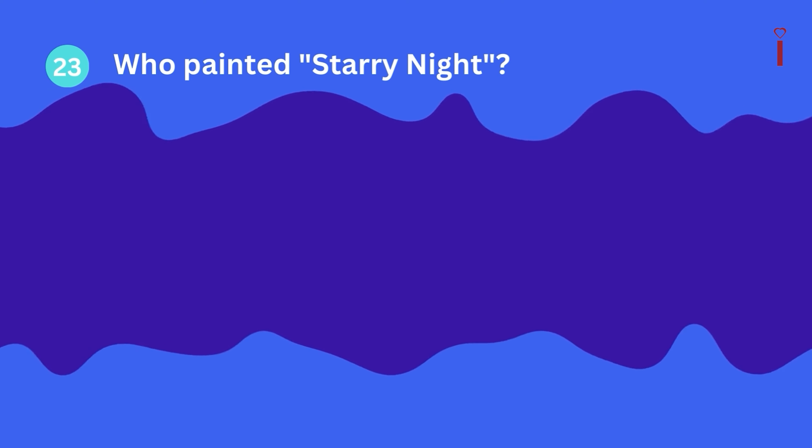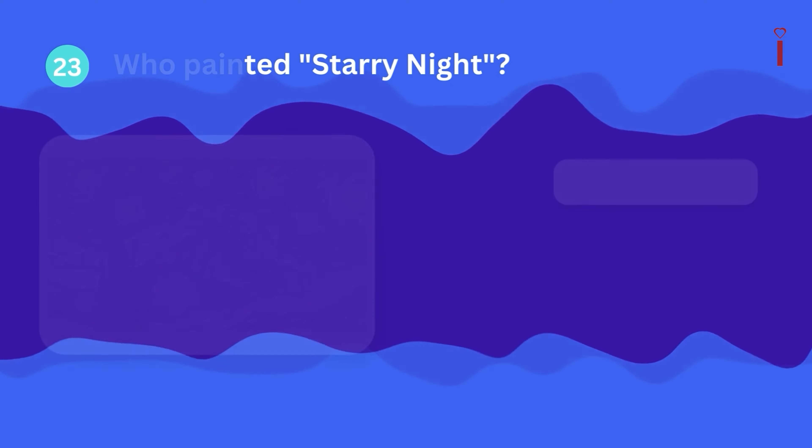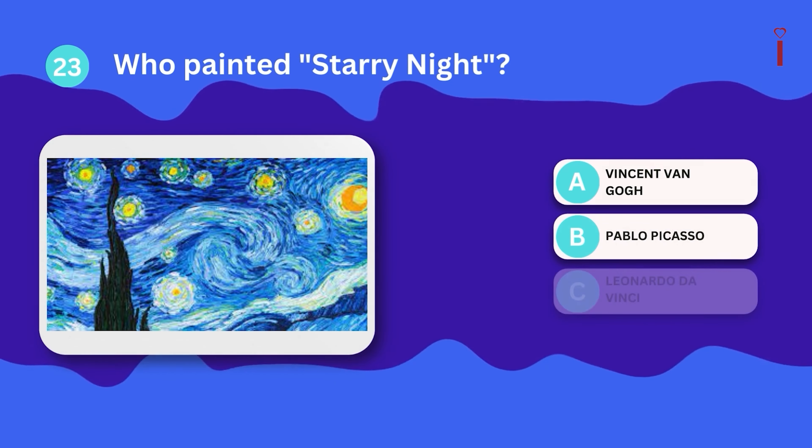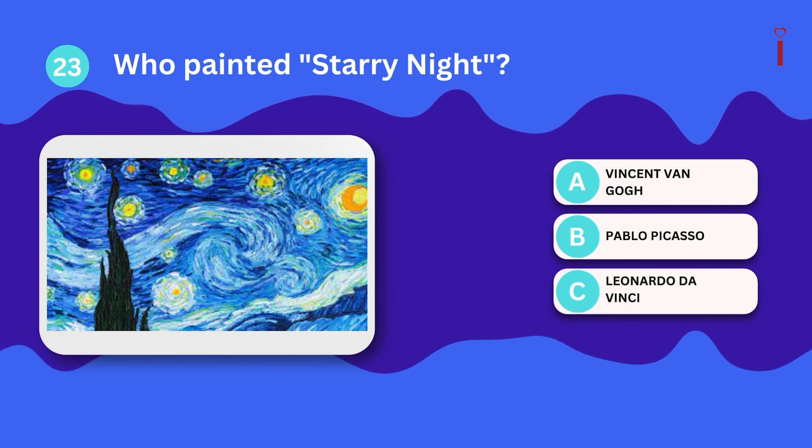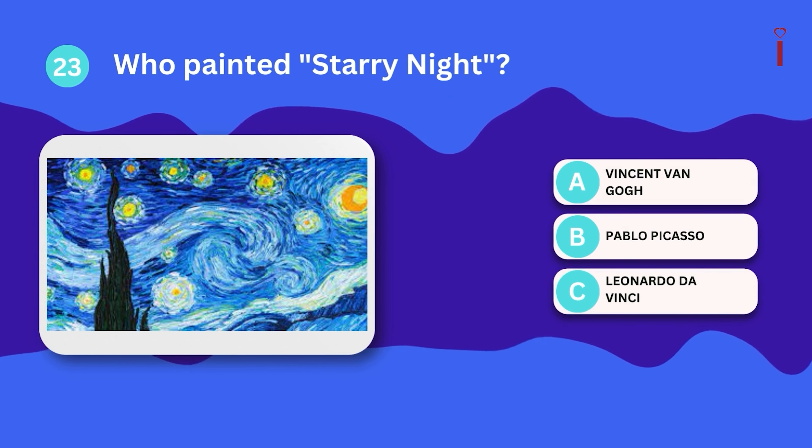Question 23: Who painted Starry Night? A. Vincent van Gogh, B. Pablo Picasso, C. Leonardo da Vinci?